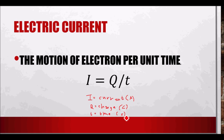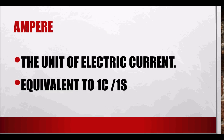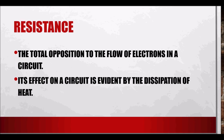The SI unit for time is seconds. One ampere is equivalent to one coulomb per one second. The ampere is the unit of electric current, named after André-Marie Ampère.